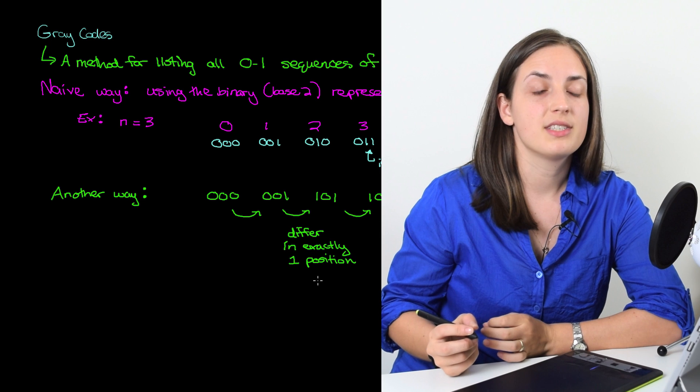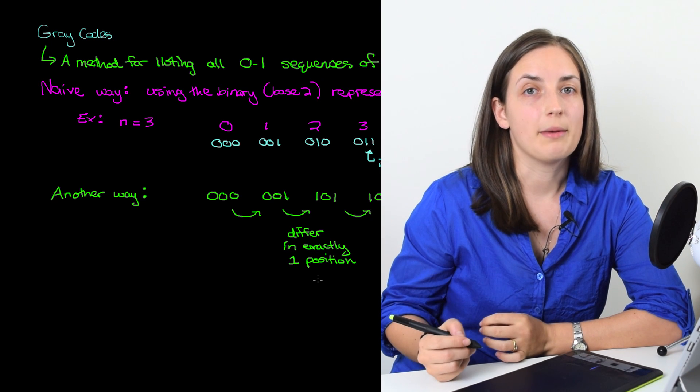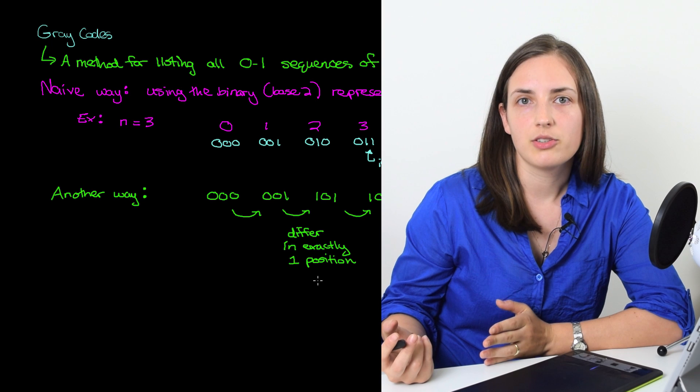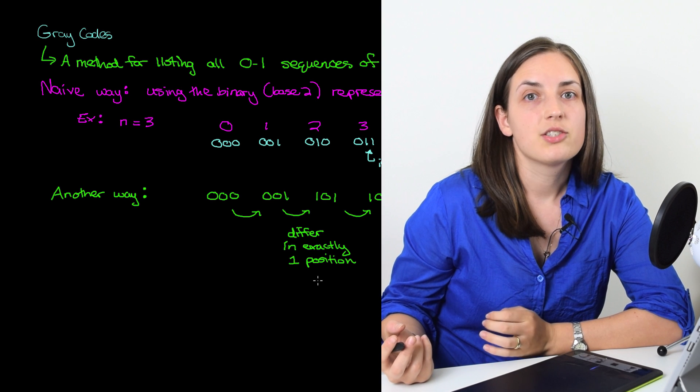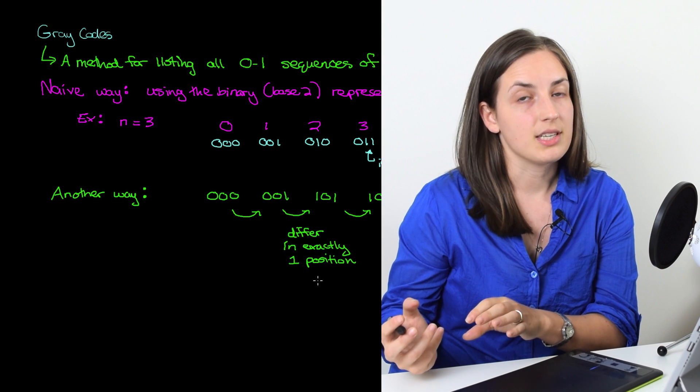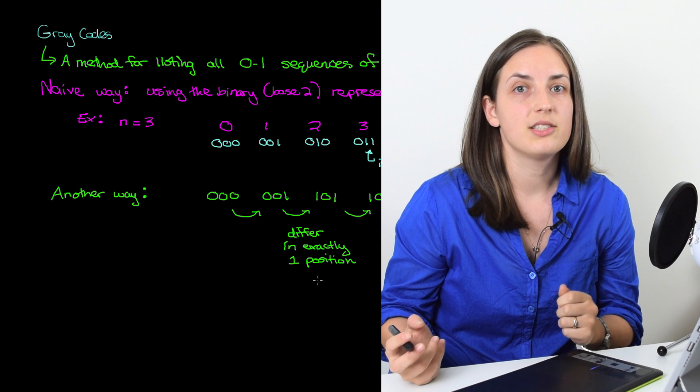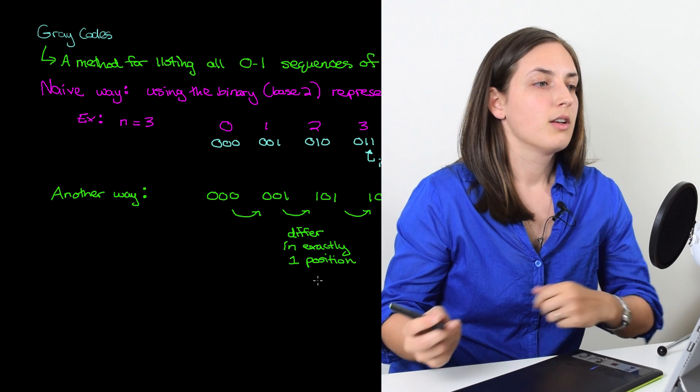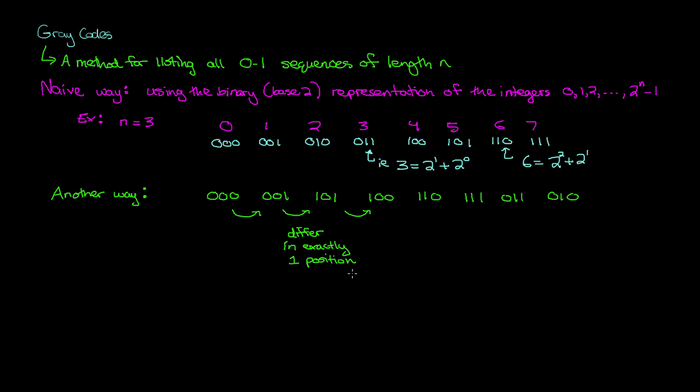The motivation for listing these numbers or these sequences in this particular way, where between each pair of sequences you only have to change one position, is the original way that computers were built. Computers were built using electrical switches. And so if you were going to go between one sequence of 0s and 1s and another sequence of 0s and 1s, it's a lot easier if only one switch has to change. Here our motivation tells us that if we have to go between a sequence 0, 1, 1 and then another sequence 1, 0, 0, all three electrical switches are going to have to change states. Whereas in the second listing of these sequences, it requires only one switch to change states.